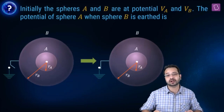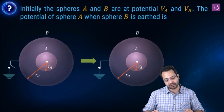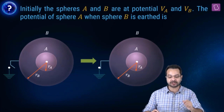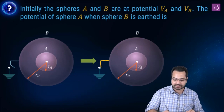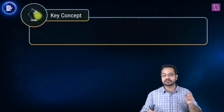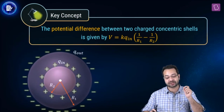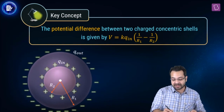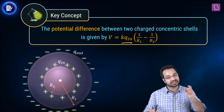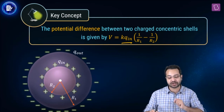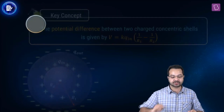We have two concentric conducting spheres A and B. The potential of A is VA and the potential of B is VB. Now we earth conductor B and we have to find out what the potential of A will be. The key concept here again is that the potential difference between two charged concentric shells equals K into Q_inside into (1/R1 minus 1/R2), and importantly the potential difference does not depend on Q_out.